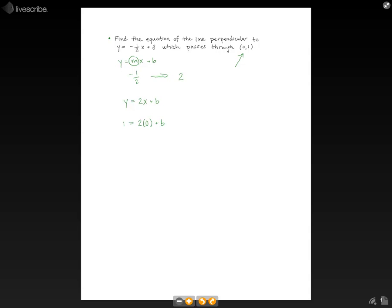So, we rewrite it like that and then this term goes away and we get one equals b. So, our equation should be y equals 2x plus one.